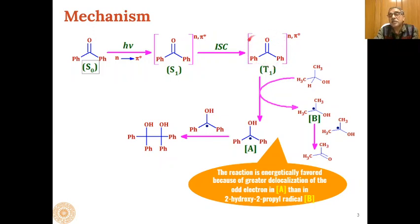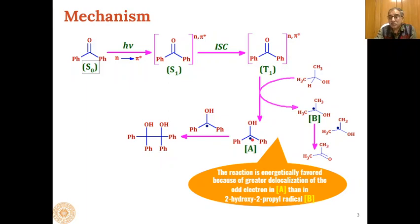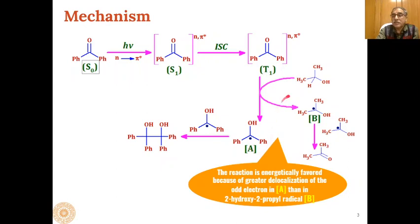Through intersystem crossing, this S1 state is converted into a triplet state T1. This T1 triplet excited state interacts with isopropyl alcohol present as a solvent. A radical is created that is in resonance with the two aromatic rings present in the molecule, and because of this the radical is highly stabilized. The H radical is shifted to the ketone to give us this ketyl radical.